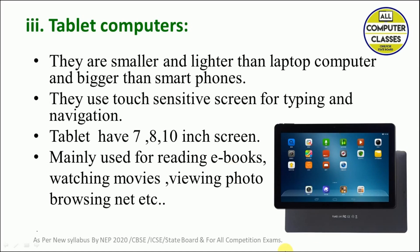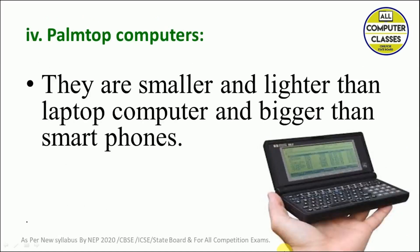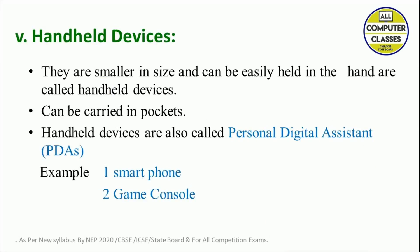Next is the palm top computer. Palm tops are smaller and lighter than laptops — they are a smaller version of the laptop — but bigger than smartphones. You can keep them on your palm. Handheld devices are smaller in size, can be easily held in the hands, and can be carried in your pocket. Handheld devices are also called PDAs, meaning Personal Digital Assistants. Smartphones and game consoles come under the category of handheld devices.